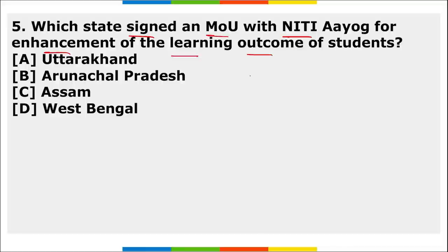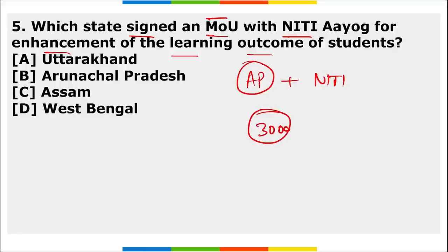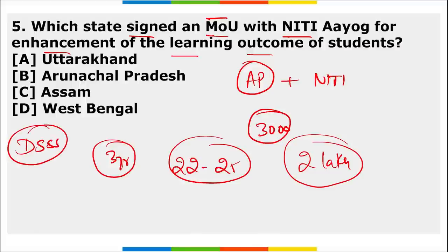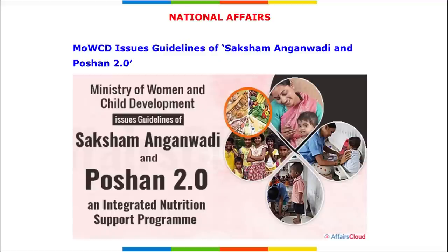Arunachal Pradesh has signed an MOU with NITI Aayog for the enhancement of learning outcomes of students. This MOU benefits 3,000+ government schools in the state and is a three-year partnership from 2022 to 2025, focusing on over 2 lakh students. This falls under NITI Aayog's Development Support Services for States initiative, also known as the DeSSS initiative.